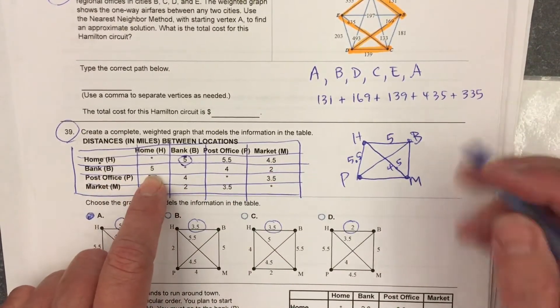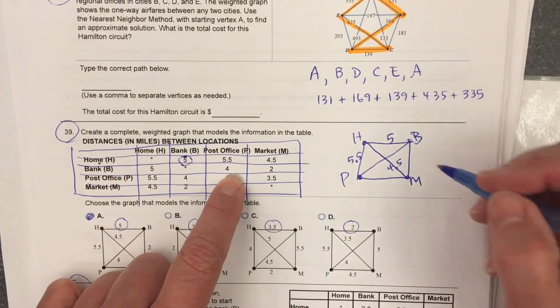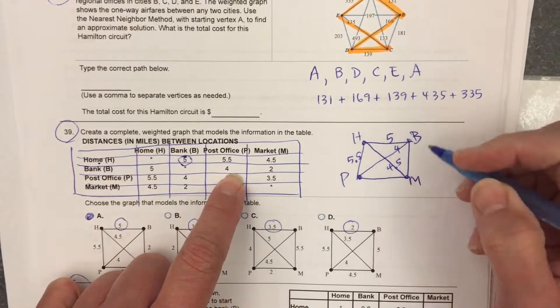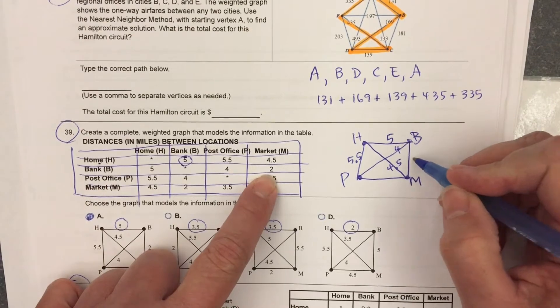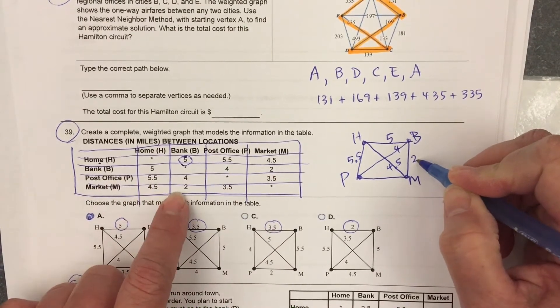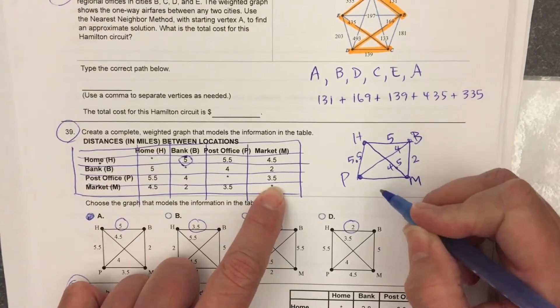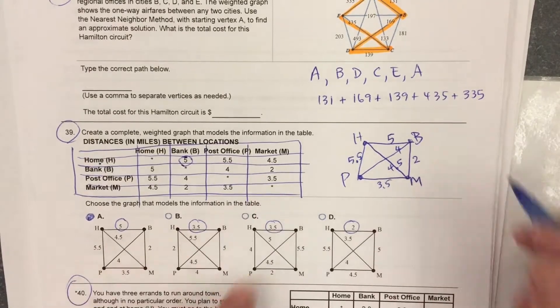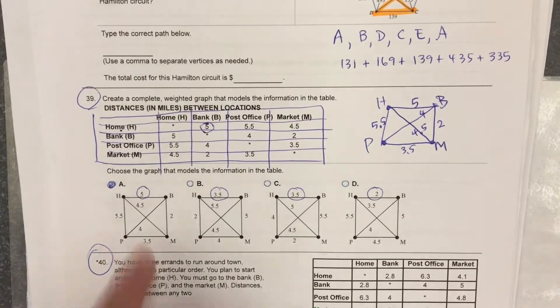Bank to home, we've got that one, 5. Bank to the post office is 4. Bank to the market is 2. The post office to the market is 3.5. Which one? The first one.